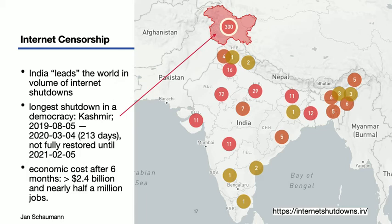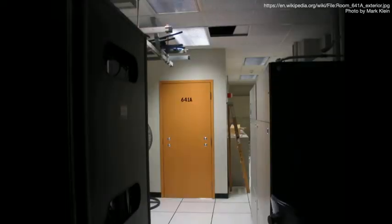If you control the legal entities in charge of physically moving packets back and forth, you can restrict people's access. But such power does not merely extend to a binary on- or off-state of the internet. Rather, you are able to access all of the communications flowing through the physical devices that you control. And so if you have the legal power to force even a private enterprise to eavesdrop on all packets zipping by, then it's no surprise that governments like that of the United States also do this.